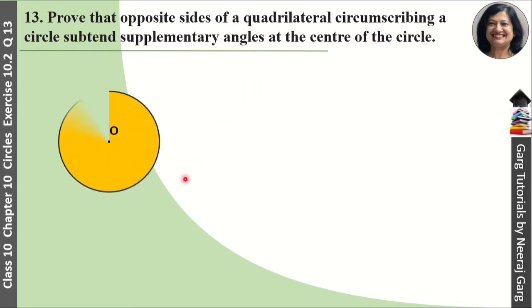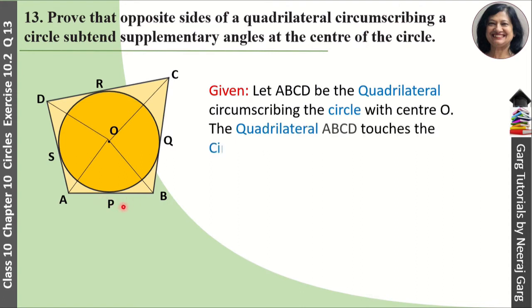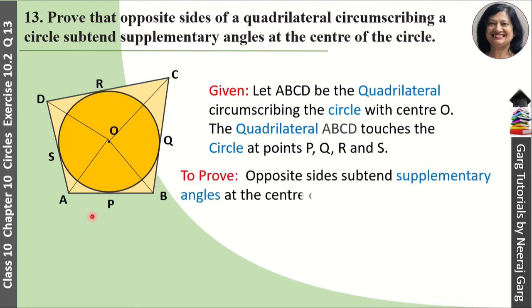To solve this, we'll draw a diagram. First, draw a circle with center O, and around it draw quadrilateral ABCD which touches the circle at points P, Q, R, and S. We need to prove that opposite sides create supplementary angles at the center.